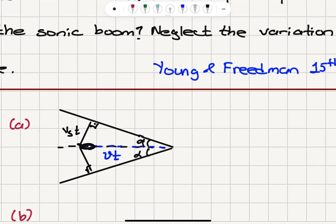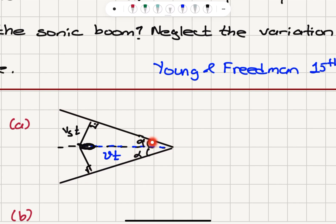Here is our jet plane that's moving at a speed V. This here is the sound propagating at speed of sound Vs, and V is greater than Vs. The distance travelled by the plane is Vt in the time interval t, whereas the distance travelled by the sound wave is Vs times t, which is less than Vt. This forms a shockwave cone, and we can see that this is the half angle alpha of the shockwave.